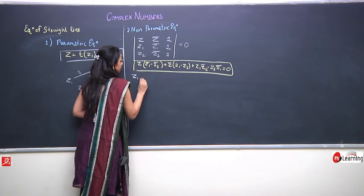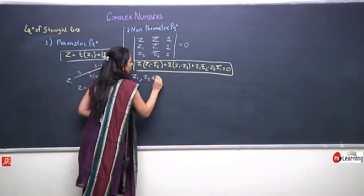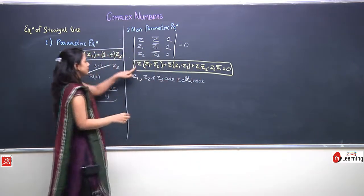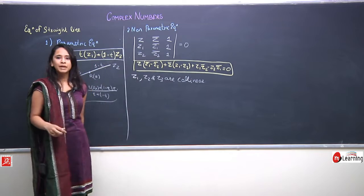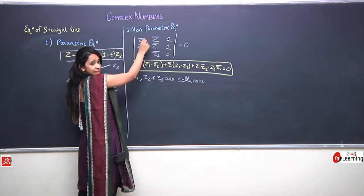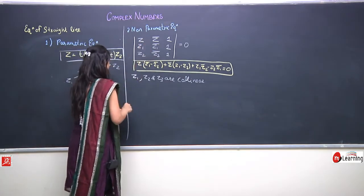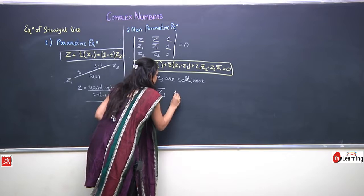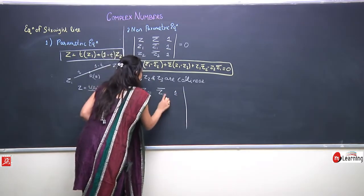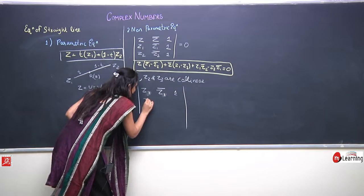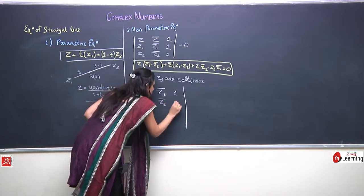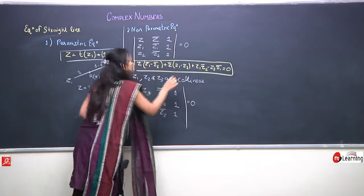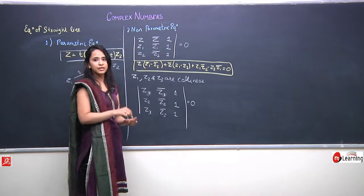If three points z1, z2, and z3 are collinear, then all three must satisfy the non-parametric equation. Replacing z by z3 in the determinant gives the condition: |z1, z̄1, 1; z2, z̄2, 1; z3, z̄3, 1| = 0. This is the condition for three points z1, z2, and z3 to be collinear.